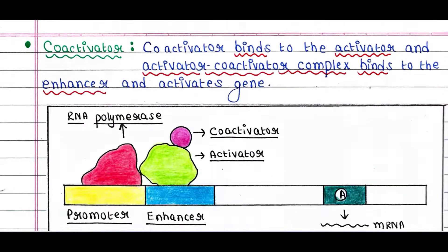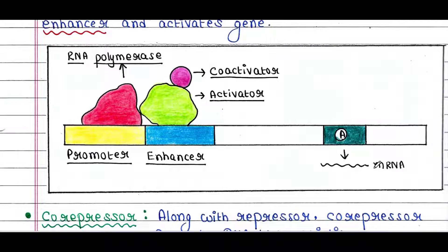Next is the co-activator. The co-activator binds to the activator, and the activator–co-activator complex binds to the enhancer and activates the gene. The function of the co-activator is equivalent to the inducer found in prokaryotes.